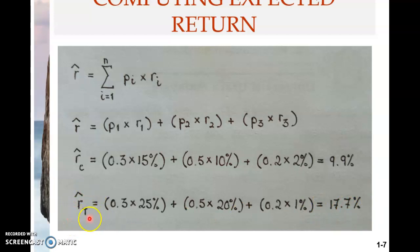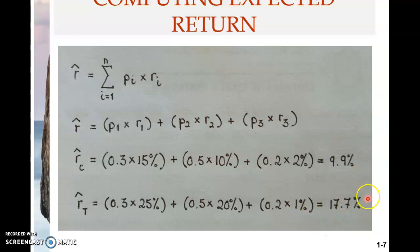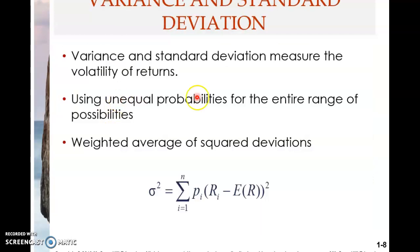If the investor can invest in Stock T several times over — many times — then the expected return will be about 17.7%. Ignoring all other factors and just looking at return, Stock T has a higher expected return than Stock C. But whether Stock T is better than Stock C, we have to consider further. For the moment, we can conclude that Stock T has a higher expected return than Stock C.